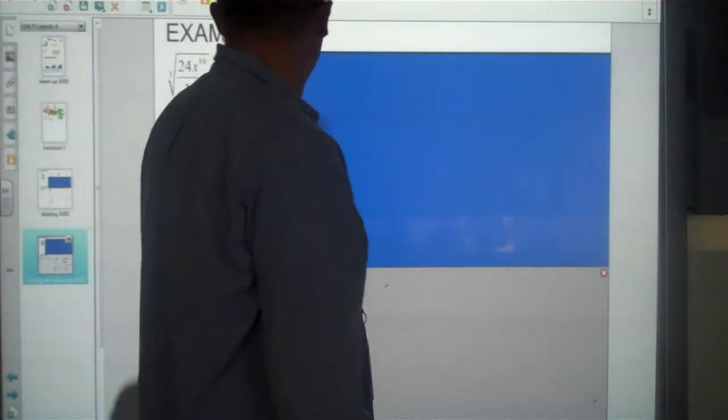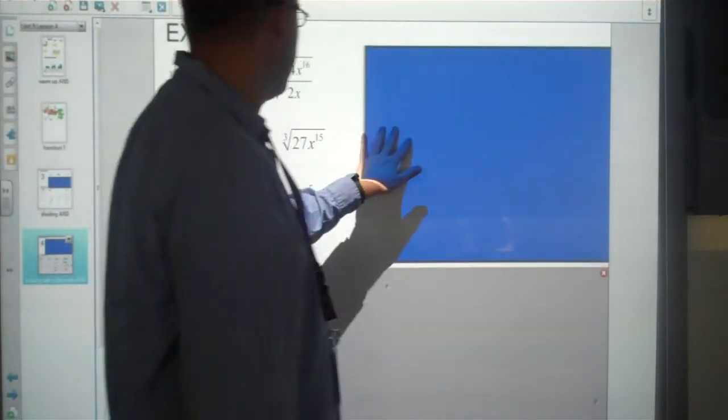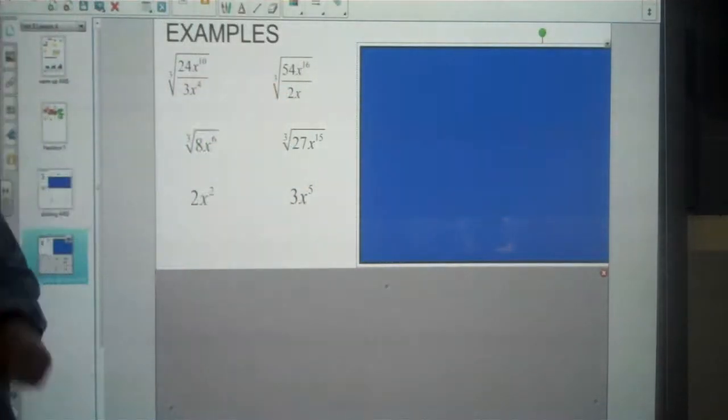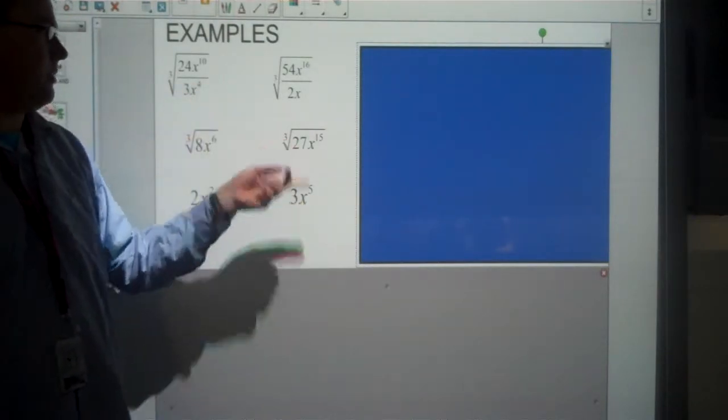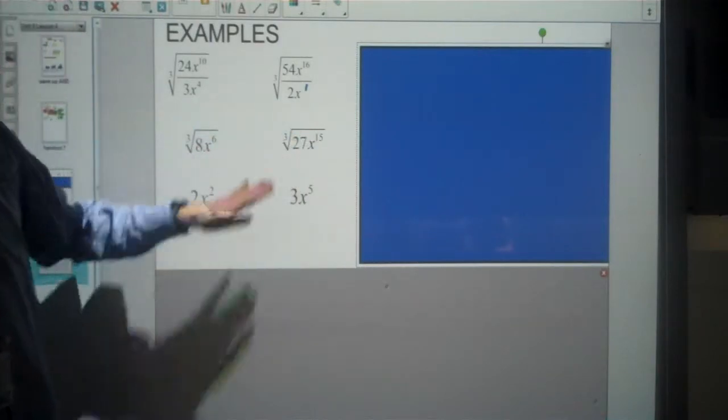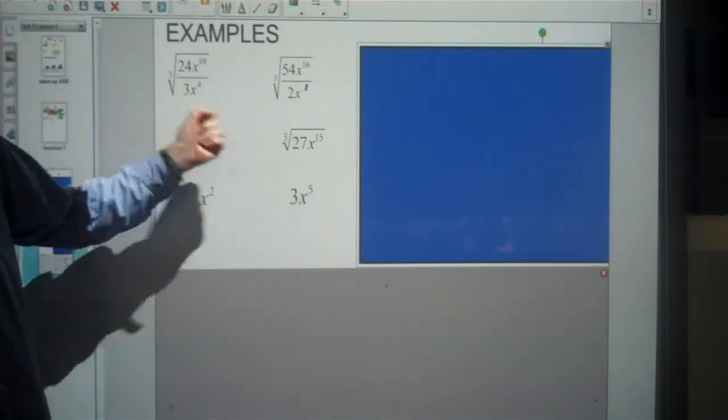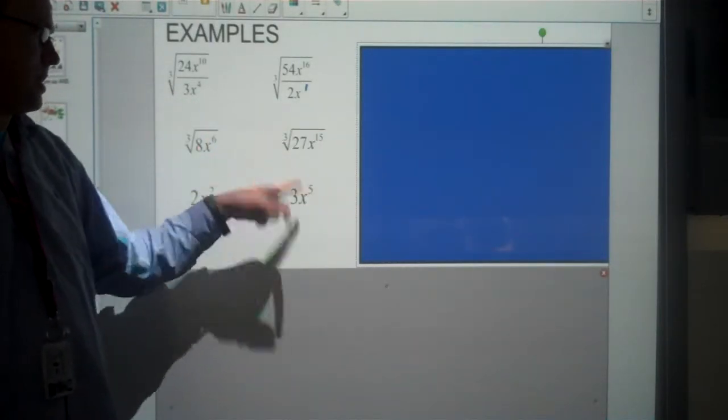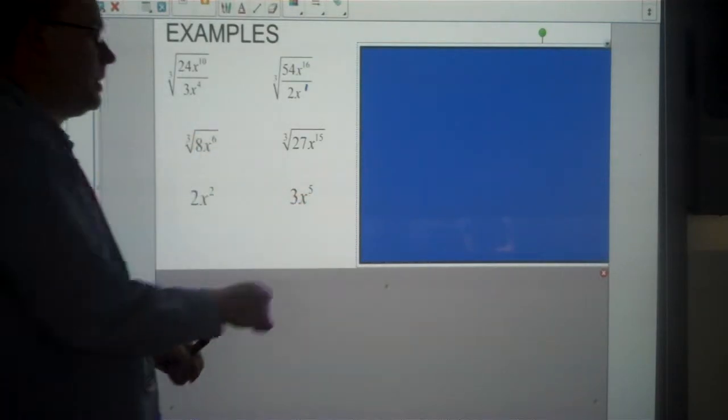So some questions are quite nice for this, actually. Move this across so we can see the next one. 54 divided by 2 is 27. We've got a power of 1 here, so 16 take away 1 gives us 15. Cube root of 27 is perfect, that's 3. And 15 divided by 3 gives us 5. And then we're finished with that question.